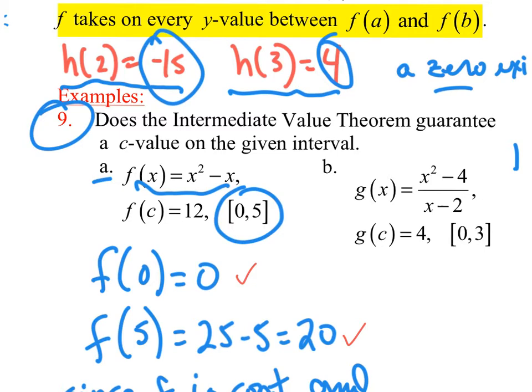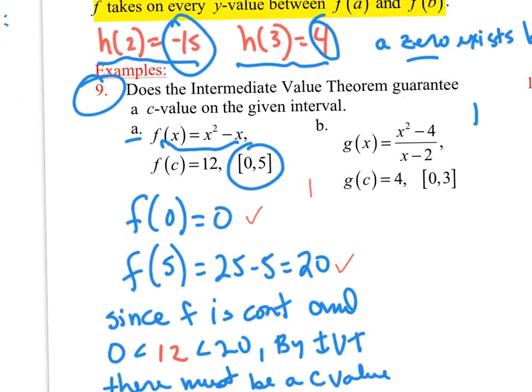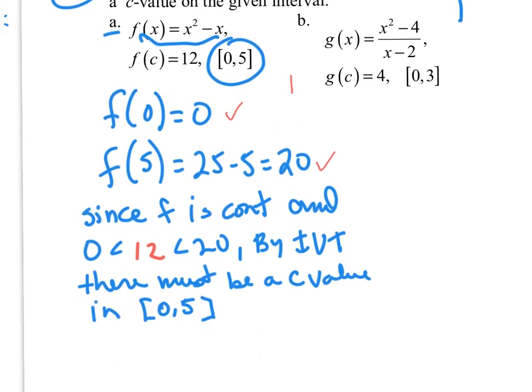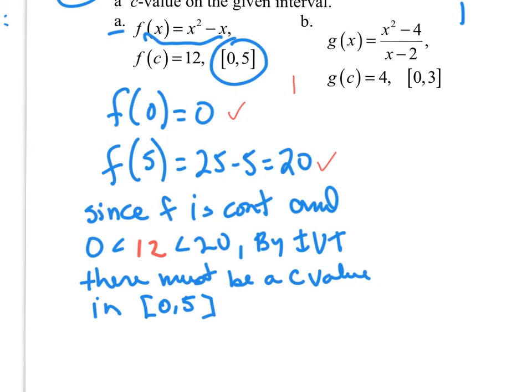So how we justify this. This is very important on how we start looking at these things. But we do justify with an explanation. So when I look down here, this is my justification. Since f is continuous and 12 is between 0 and 20, by the Intermediate Value Theorem, there must be a c value in the interval between 0 and 5. And that's how you need to justify that the Intermediate Value Theorem does work.